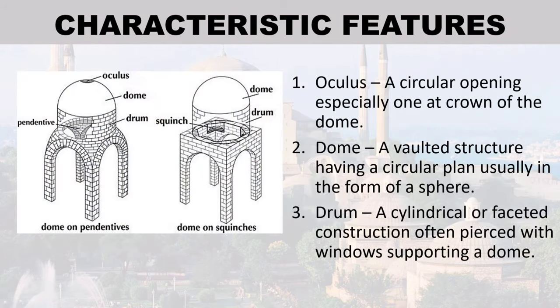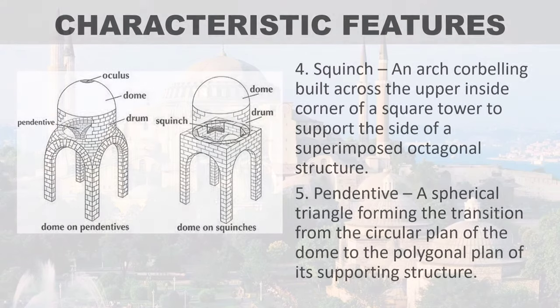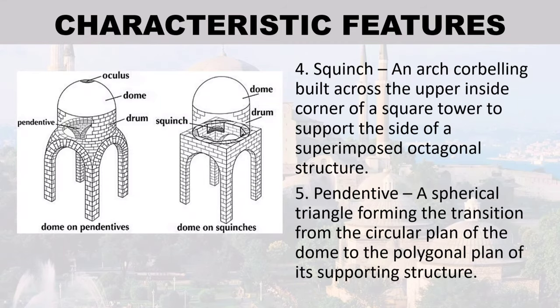Parts of a Byzantine dome: one — the oculus, a circular opening especially at the crown of the dome. Two — the dome itself, a vaulted structure with a circular plan usually in the form of a sphere. Three — the drum, a cylindrical or faceted construction often pierced with windows supporting a dome. Four — the squinch, an arched corbelling built across the upper inside corner of a square tower to support the side of a superimposed octagonal structure.